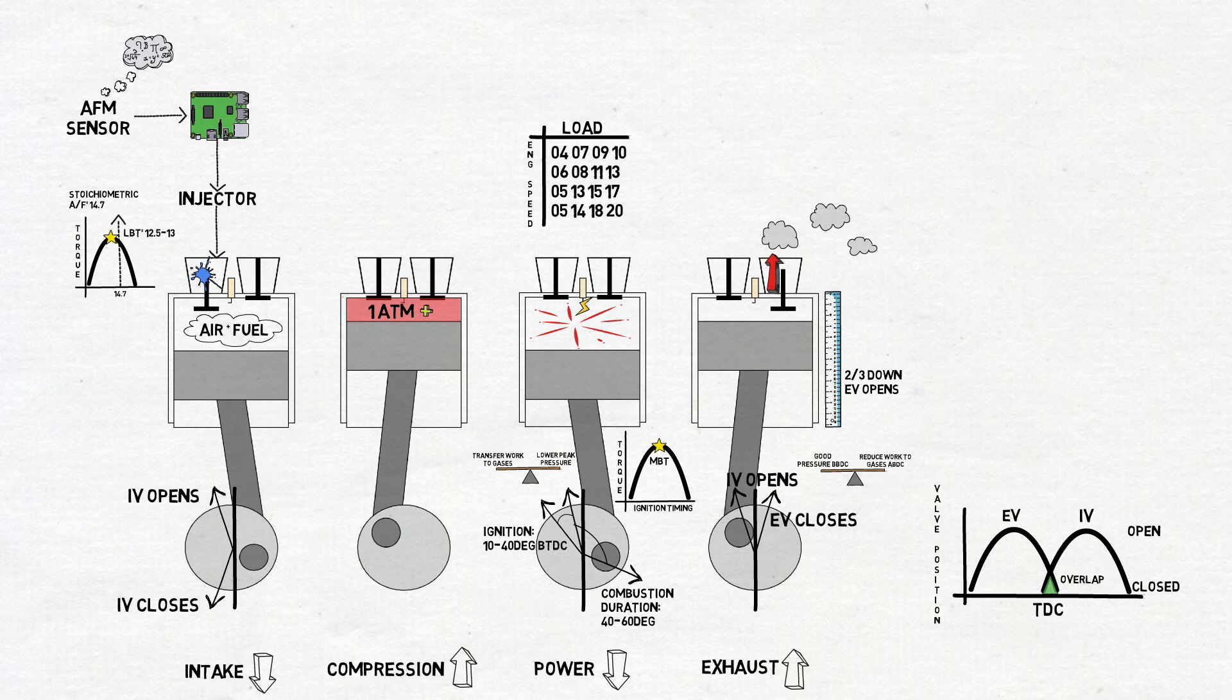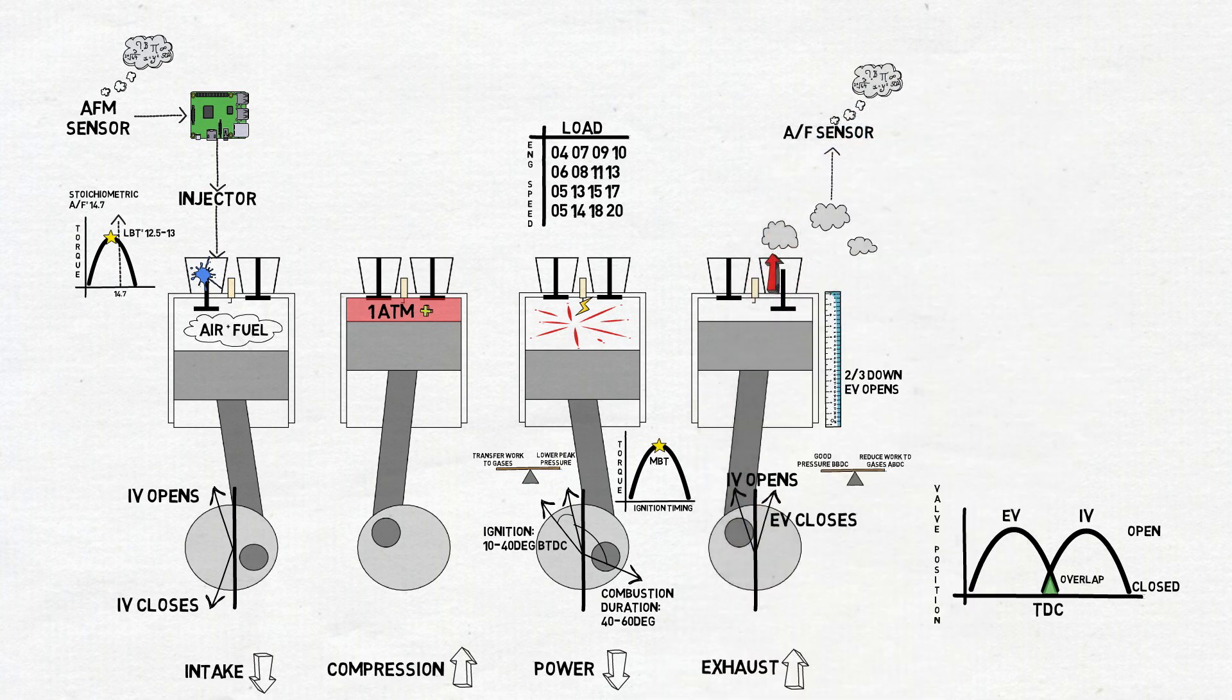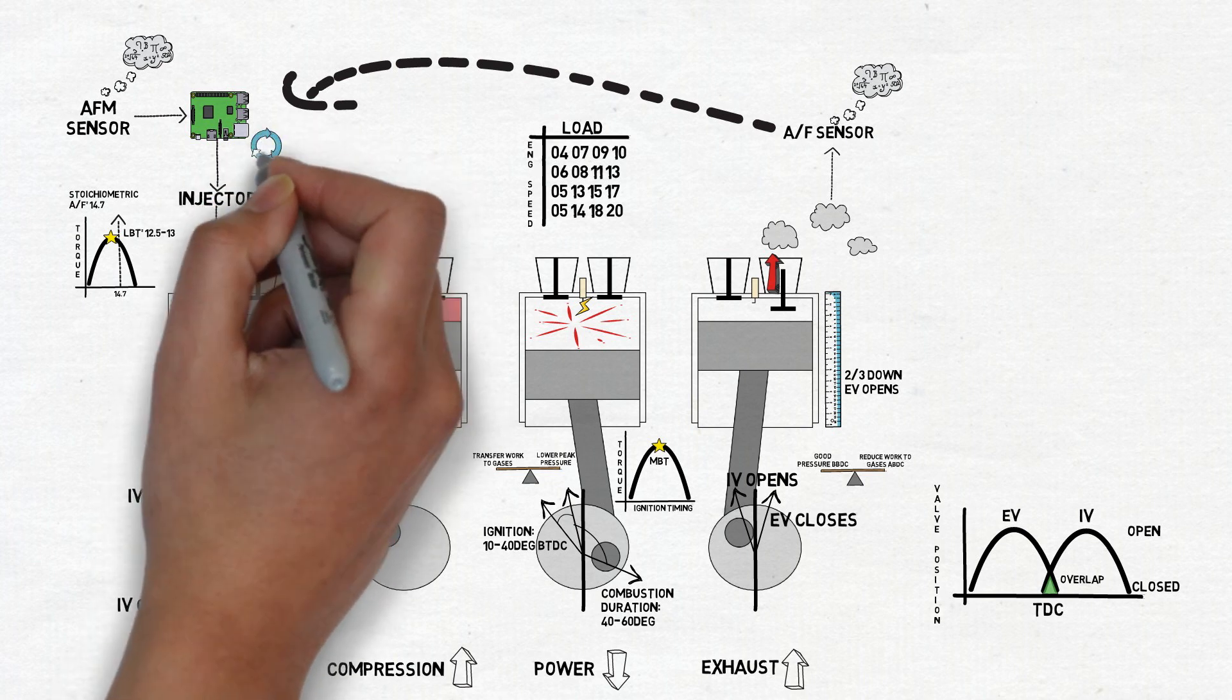After the gases exit the cylinder, they are analyzed by an air fuel sensor in the exhaust pipe. The sensor measures their oxygen content and provides feedback to the ECU. This information is used to adjust injection amount to achieve the desired air fuel ratio. Then the process is repeated over and over again.